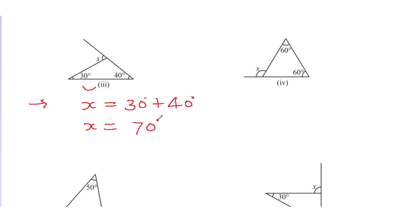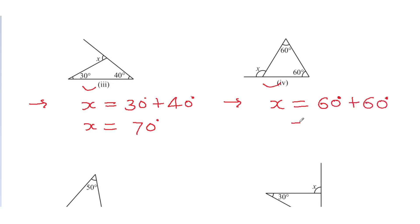Now look, figure number 4. What will the value of x be here? x is equal to 60 degrees plus 60 degrees. Do the addition — x will be 120 degrees.